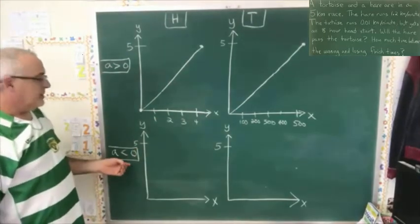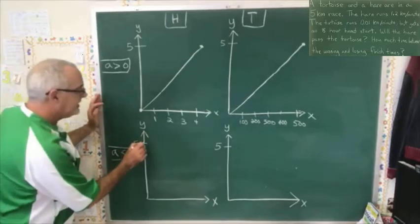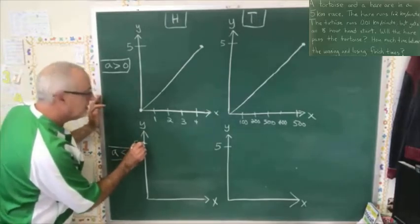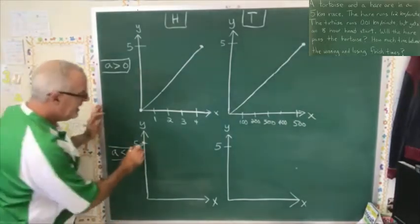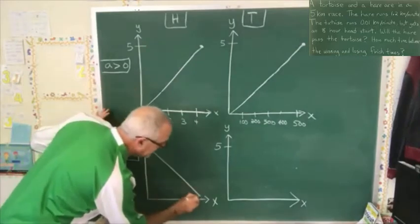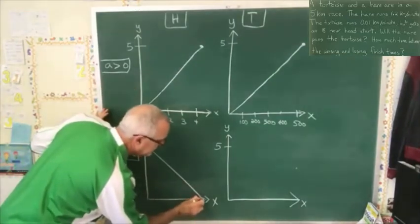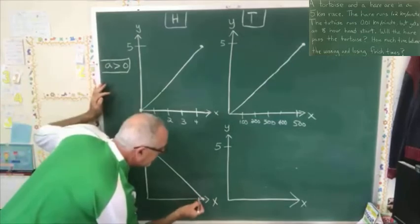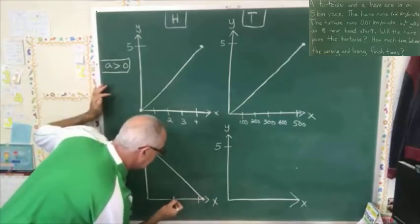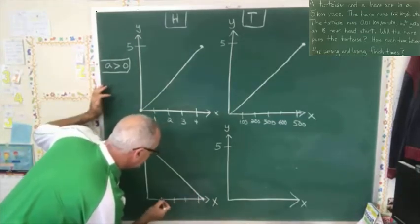When the slopes are negative, it's not very different, but they have to start with five kilometers left to cover, and then they have to get to zero. And, of course, it takes the hare 4.17 minutes to do that. So I'm scaling the axes very similarly.